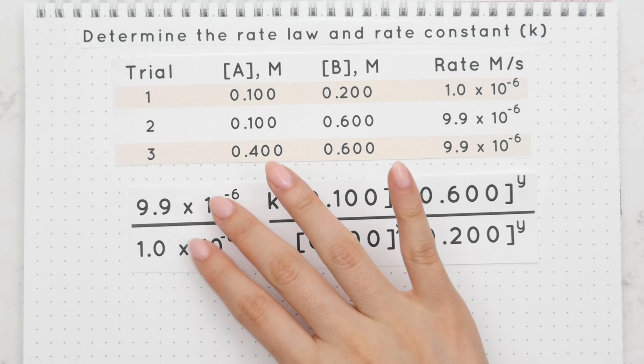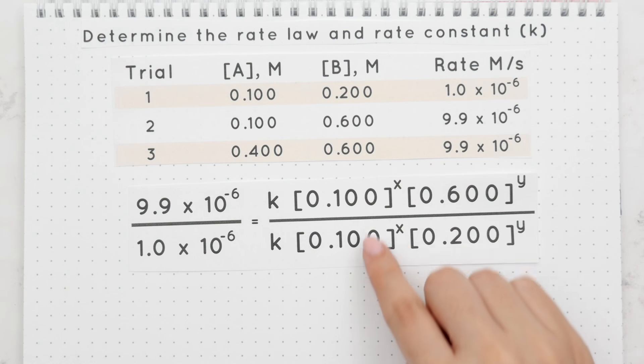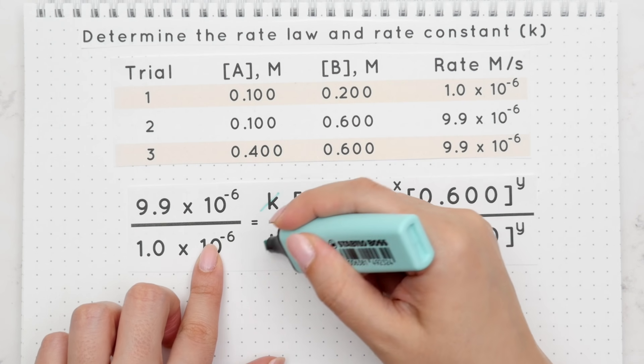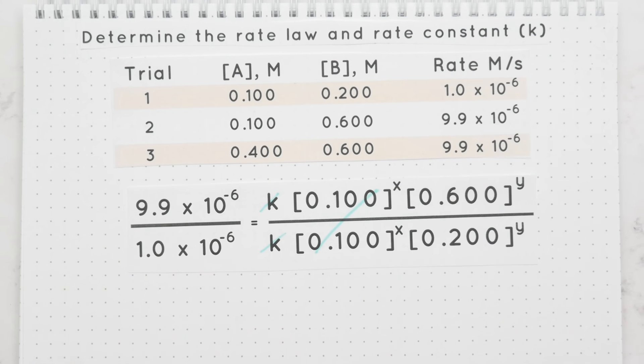So we will divide rate 2 by rate 1 and plug in the values for each reactant A and B. Next we can cancel out like terms, so the k's cancel and this entire term cancels out.